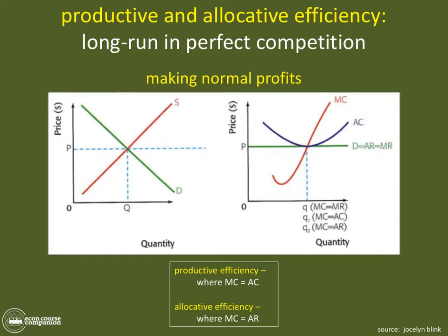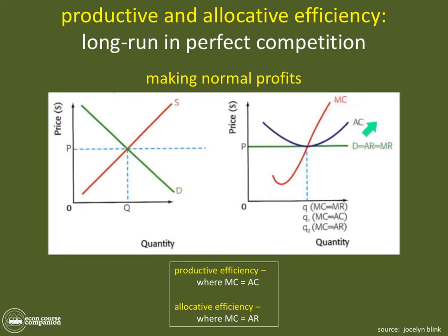The perfect competition market structure is perfect in all ways — both for firms producing exactly what they want to produce at the most efficient point, meaning they produce at the bottom of their average cost curves, their lowest average cost. Firms are also producing the exact allocative amount that society and consumers want, which is where MC equals AR. And they're profit-maximizing because this is where MC equals MR.